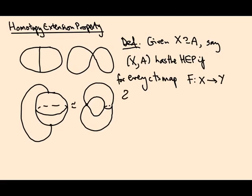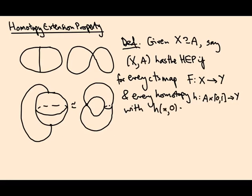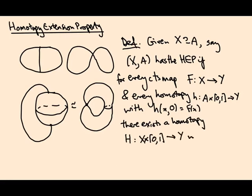and every homotopy little h: A×[0,1]→Y with h(x,0)=f(x), there exists a homotopy capital H: X×[0,1]→Y with H(x,0)=f(x) and H restricted to A×[0,1] equals little h. Okay, that's a bit of a mouthful.